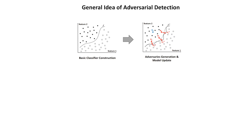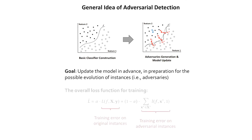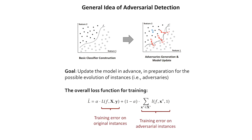To handle the adversarial scenario, the general idea of our solution is to update the model in advance by considering the possible evolution of adversary instances that may cause significant threat to our model. We adopt the adversarial learning scheme and augment the original training data with the predicted malicious instances after evolution.